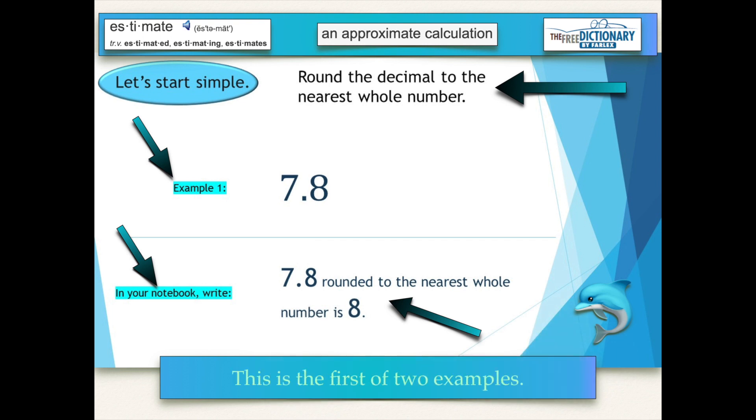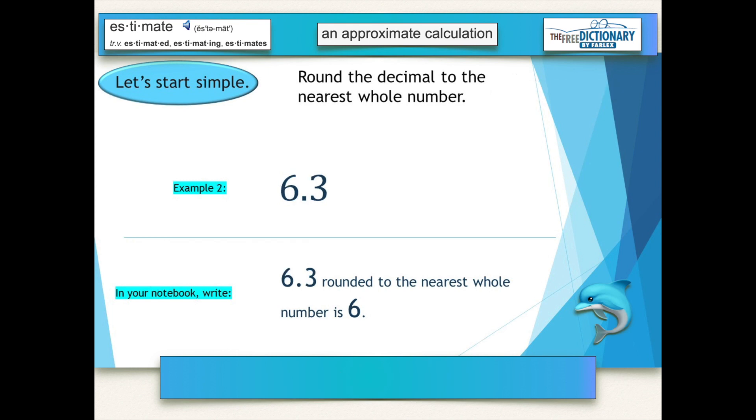This was the first of two simple examples. Here's our second one, our job to round the decimal to the nearest whole number. Example 2 gives us 6 and 3 tenths. In your notebook write 6 and 3 tenths rounded to the nearest whole number is 6.